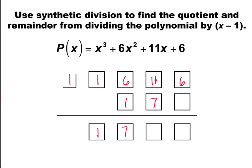We add these terms, 11 plus 7 is 18. One more multiplication by this term, 1 times 18 is 18, and we add these terms to get 24.